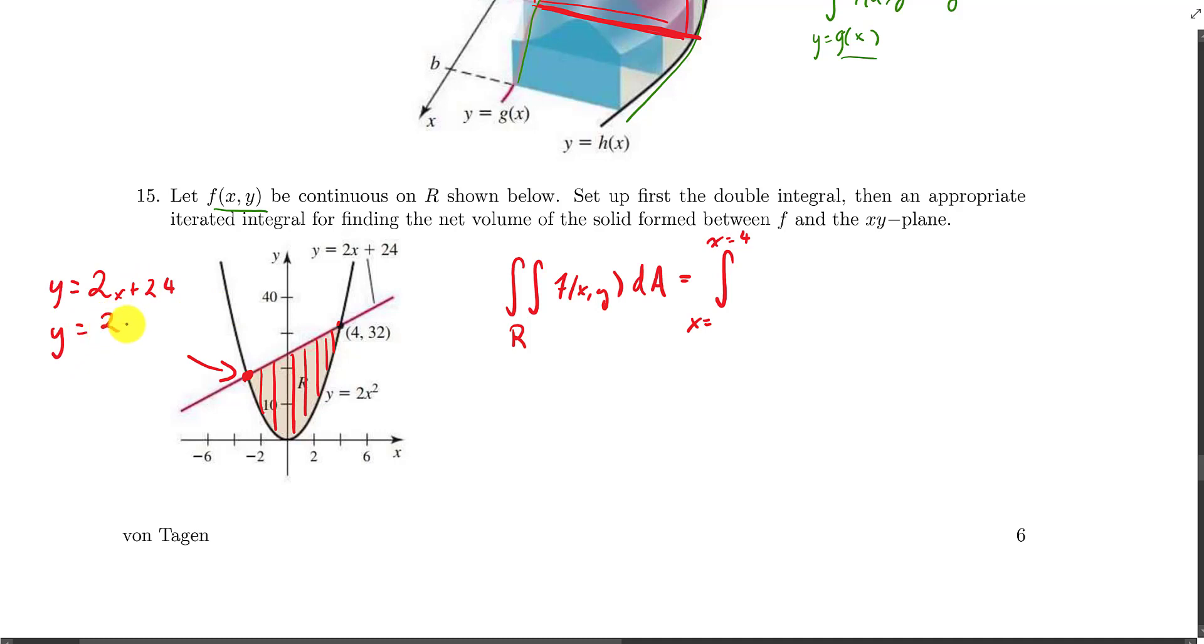So if we set these two equal to each other, we've got 2x squared is equal to 2x plus 24. Or 2x squared minus 2x minus 24, it needs to equal 0. Or 2 times x squared minus x minus 12, it needs to equal 0. So this happens at, if we continue factoring this, this would be x minus 4. We already knew that x equals 4 was an end point. And then x plus 3 equals 0. So that's at x equals negative 3. So that's the ordered pair, negative 3, comma, and then if we plug that in, negative 6, I think that's 18. But the point is, is that we're going to start drawing these cross-sectional slices. They start at x equals negative 3, and they stop here at x equals 4.